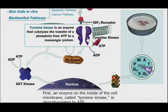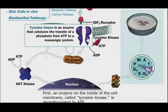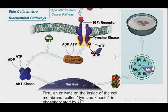Tyrosine kinase is an enzyme that catalyzes the transfer of phosphate from ATP to messenger proteins. Just like IGF-1 is a ligand that binds to the IGF-1 receptor, tyrosine kinase is activated. Tyrosine kinase activation leads to phosphorylation, and kinase activity is phosphorylated by ATP.